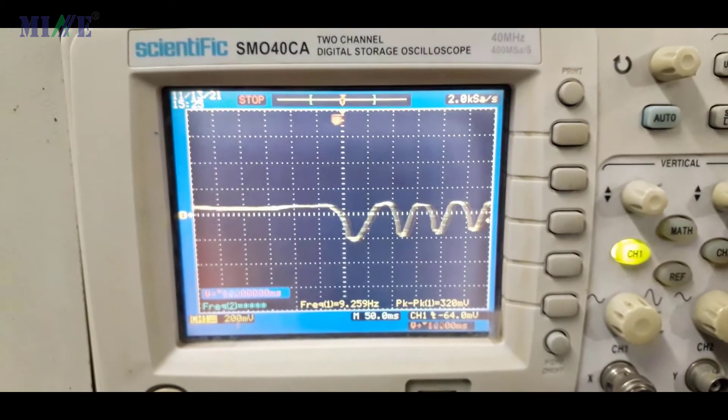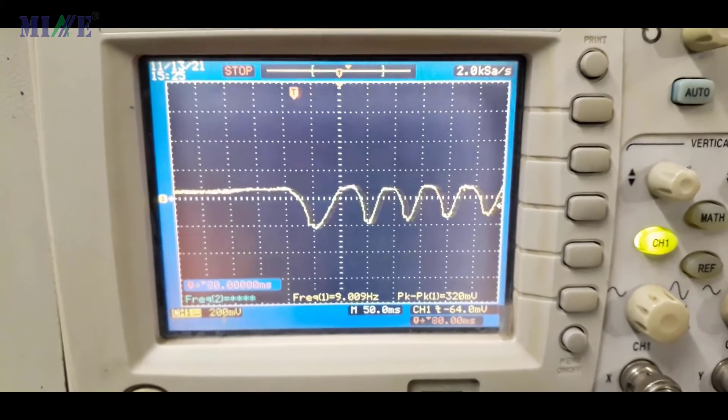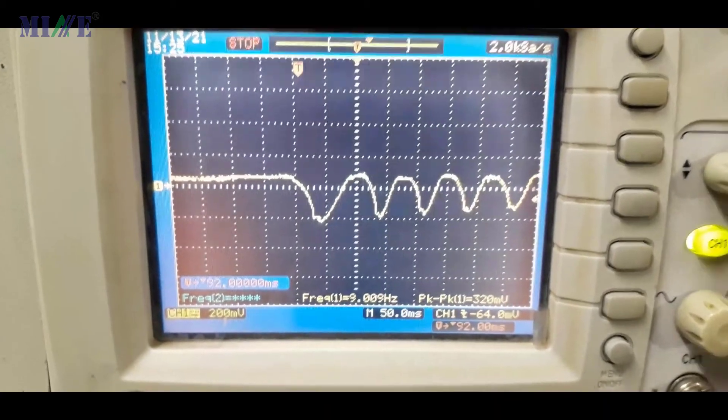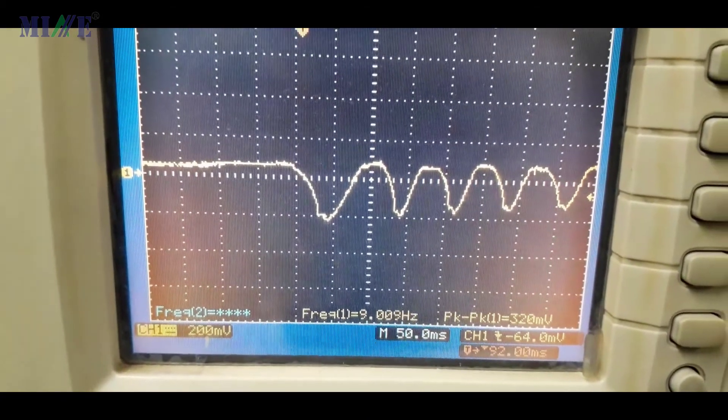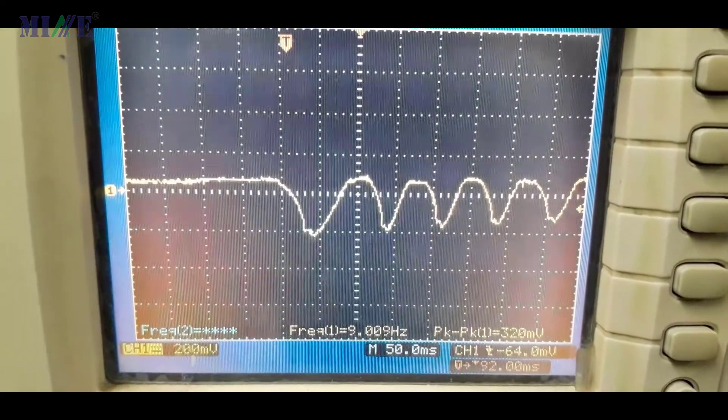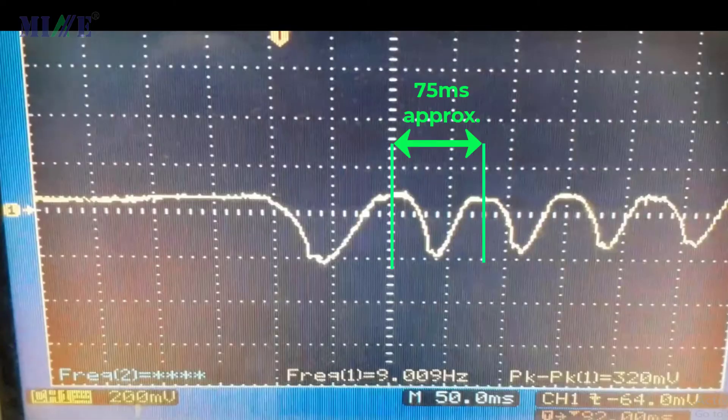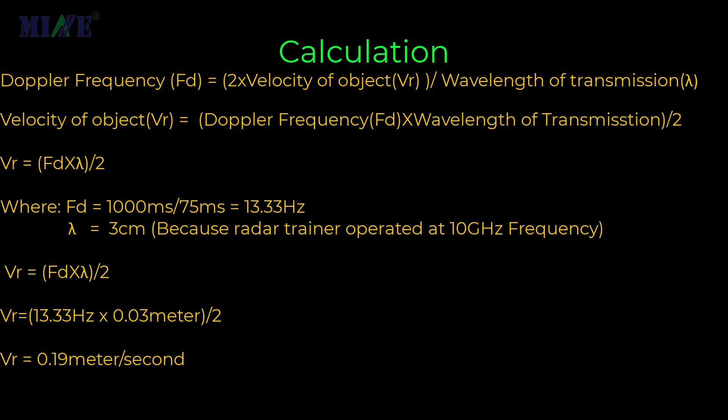After getting signal, we can set time base and amplitude base as per our requirement. Now calculate time between two consecutive peaks. From this calculation we can find object velocity using radar trainer.